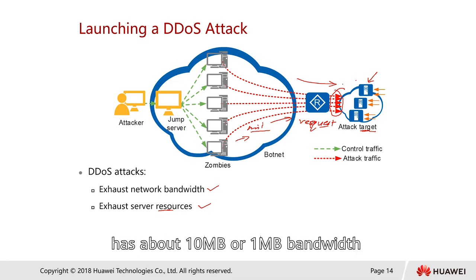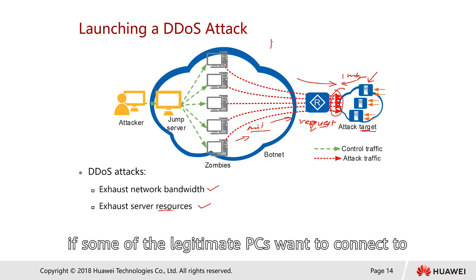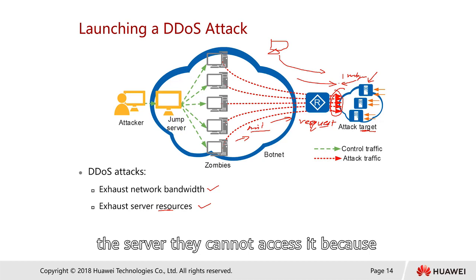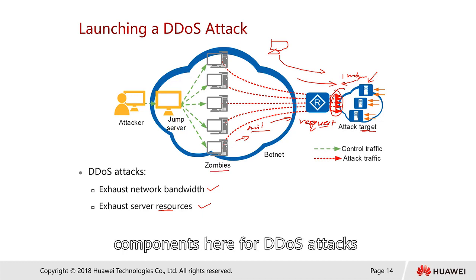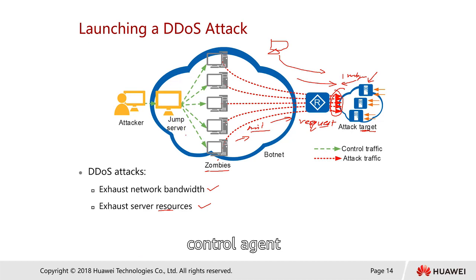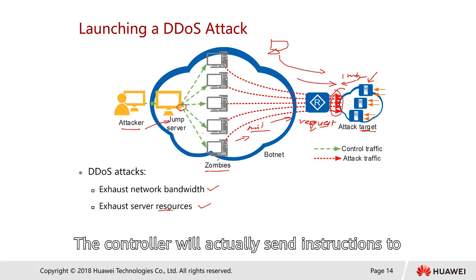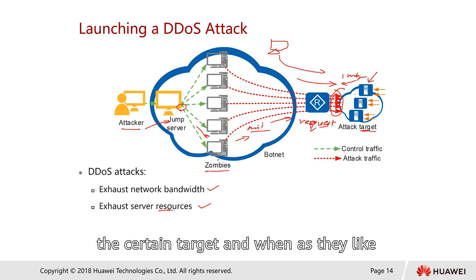The server receives an overwhelming number of requests, which exhausts server resources and bandwidth. If the server only has 1 or 10 megabits of bandwidth, it will easily be used up. Therefore, legitimate PCs cannot access the server because of the DDoS attack. For DDoS attacks, zombies are machines affected by the control agent, and the attacker connects to a controller that sends instructions to all zombies to attack a specified target.